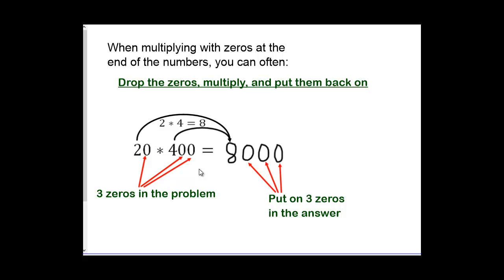So 20 times 400. Drop the zeros, take 2 times 4, write down 8. Then count up the zeros and put those on the end. So the answer is 8,000.